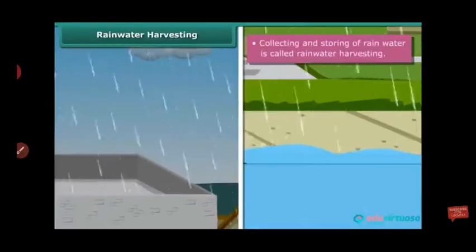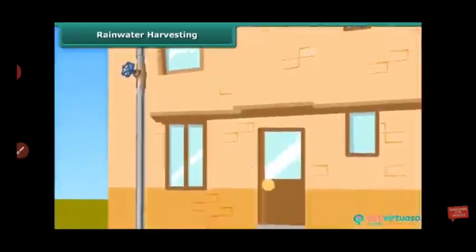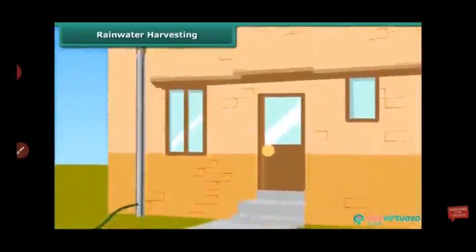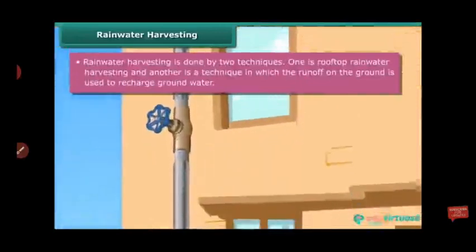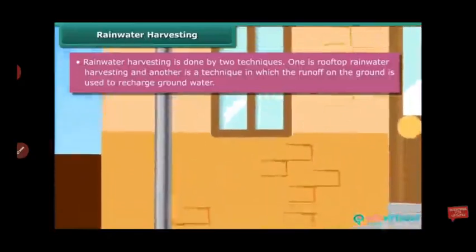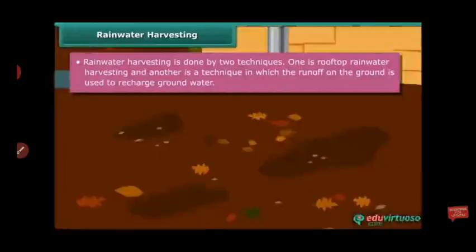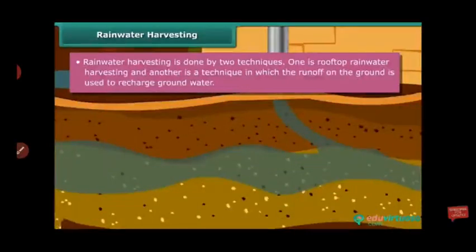In this process, rainwater is collected from the rooftop through a pipeline. There are two techniques: the pipeline is connected to a tank for later use, or it is connected directly to the ground to replenish the groundwater level. The water seeps into the ground, replenishes the groundwater, and can also be used by human beings.